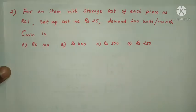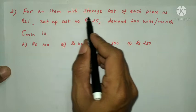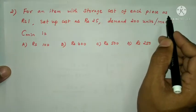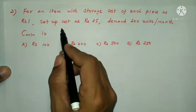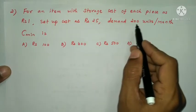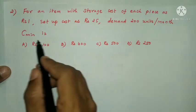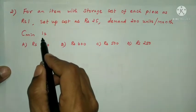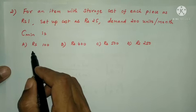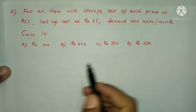Next question: for an item with storage cost of each piece as Rs.1, setup cost Rs.25, demand 200 units per month. Find the minimum value. The print options are 100, 400, 500, and 250.